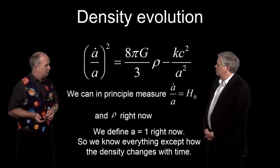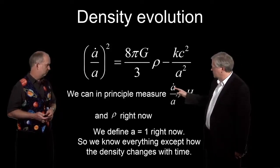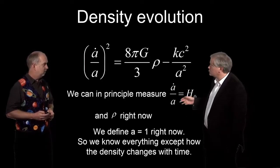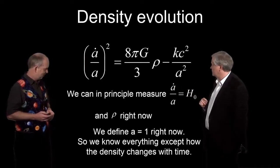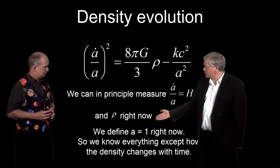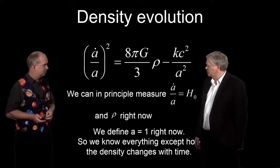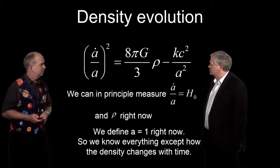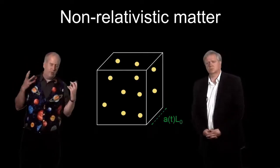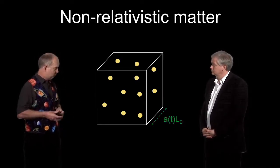In principle, we sort of know what ȧ/a is. That's the Hubble constant. I helped measure that as part of my PhD thesis. And we can measure to first order what the density is right now. Clearly we can figure out how the density is going to change over time, isn't it? It's pretty straightforward. Well, if we assume that there's only a finite amount of stuff per unit volume in the universe, that's the law of conservation of matter-energy, then it is pretty straightforward.